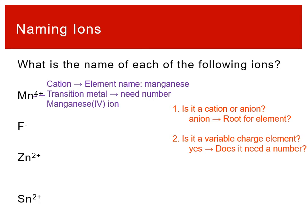F minus: we see the minus sign, so that tells us it's an anion. That means we don't take the name of the element as-is — we need the root. The name is fluorine, the root is fluor, and then we add -ide to the end: fluoride. The -ide tells you it's an anion, and fluor tells you it's based off fluorine. Because fluorine is in the halogens, it's always going to be minus 1, so when you say fluoride ion, the reader knows it has to be minus 1.